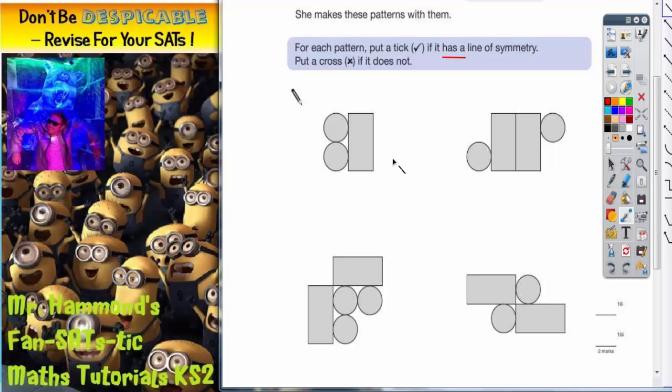So for example if I placed my mirror here you're going to check that both sides match. If I folded this side over would it fit exactly over this side? And the answer obviously there is no. How can two circles fit exactly over a rectangle? It's not going to work. So that can't be a line of symmetry.